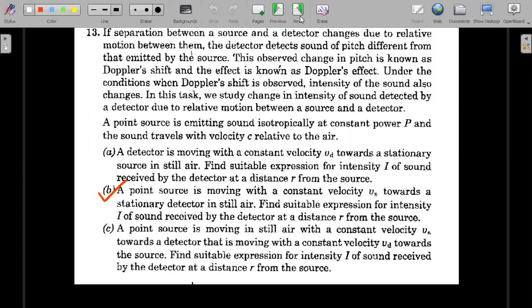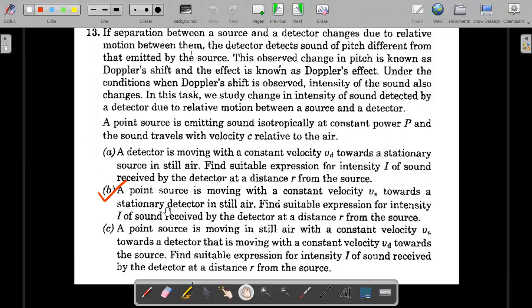For those who have already watched part A, in part B the point source is moving with a constant velocity Vs towards the stationary detector. The detector is stationary this time, but the point source is moving towards the detector. He asks for the suitable expression for the intensity I of sound received by the detector at a distance R from the source. The power of that source is P and it's a point source emitting sound isotropically in all directions.